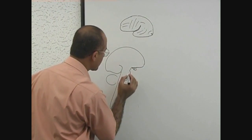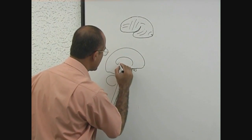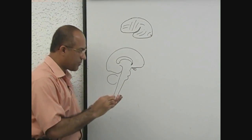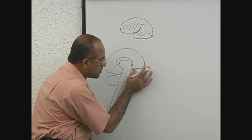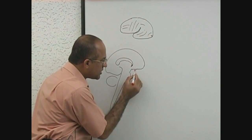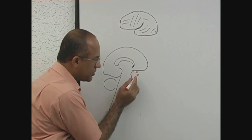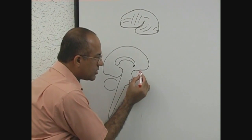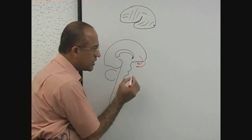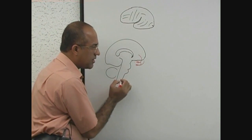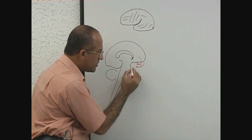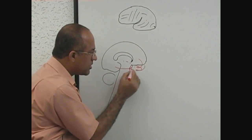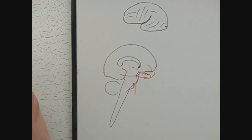Here is the corpus callosum and the cingulate gyrus. The circle of Willis is somewhere here. The internal carotid artery is here, the anterior cerebral artery, anterior communicating, and posterior cerebral — you know exactly where the structures are.